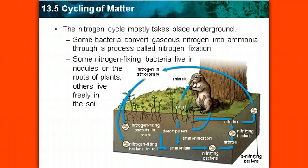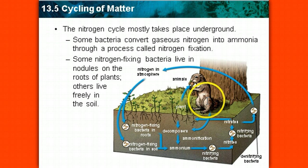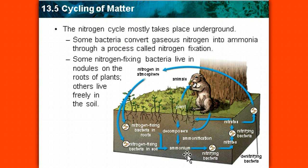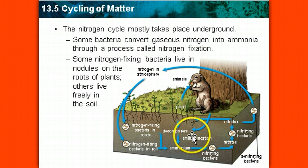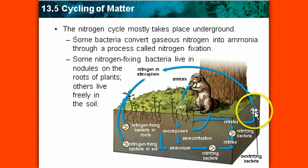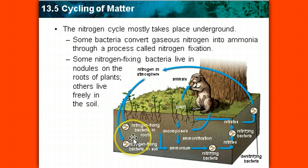Looking at the rest of the nitrogen cycle, we can see some other key processes. There's ingestion — animals eat the plants, that's how they get their nitrogen. We can't use it in the gaseous form. It's up to the decomposers to help put nitrogen back into the soil from organisms that live on Earth. More bacteria help decompose and convert nitrogen into different formats so it can be absorbed by plants. There are also denitrifying bacteria that help put nitrogen back into the atmosphere, and then nitrogen-fixing bacteria convert it back into a format usable by all living things.